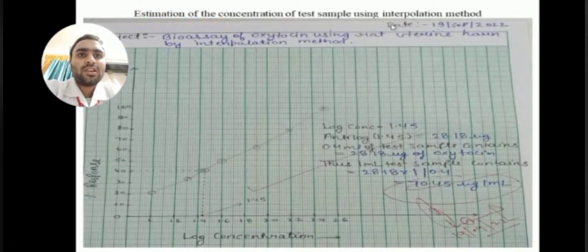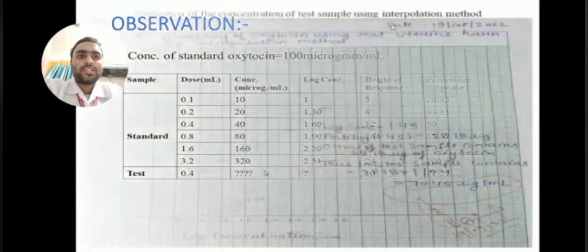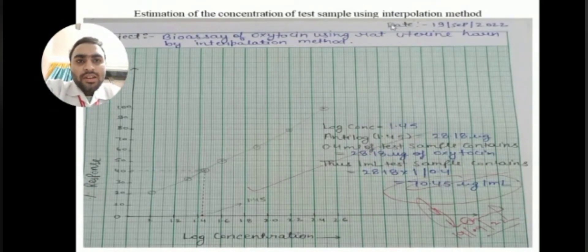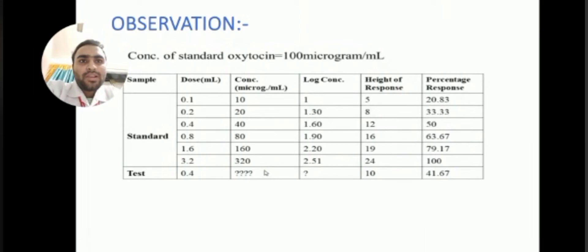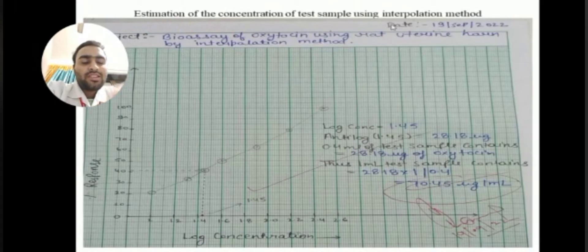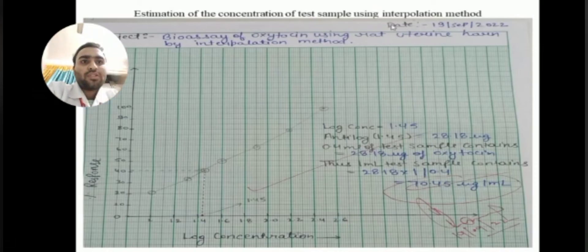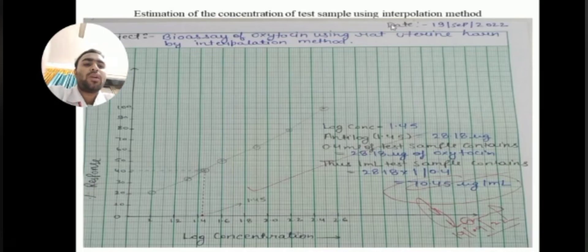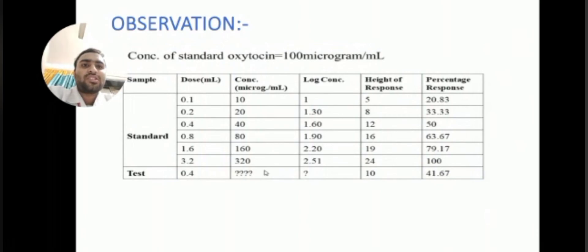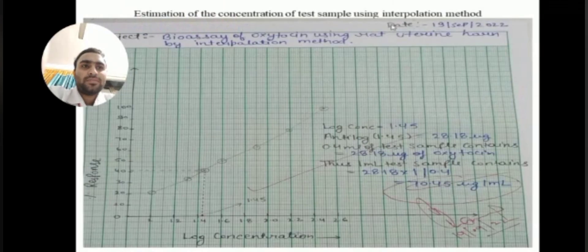Here is the graphical representation with log concentration on the X-axis and percentage response on the Y-axis. We plot the standard curve and from the test dose of 0.4 ml, we read off the log concentration from the graph. We obtained a log concentration of 1.45 for the test. Taking the antilog, we get 28.18 micrograms. This 28.18 micrograms corresponds to 0.4 ml of solution. To find the concentration per ml, we multiply: 28.18 × (1/0.4) = 70.45 micrograms per ml. So the concentration of the unknown test solution is 70.45 micrograms per ml.